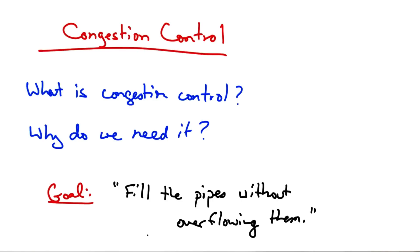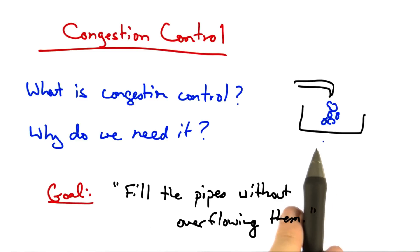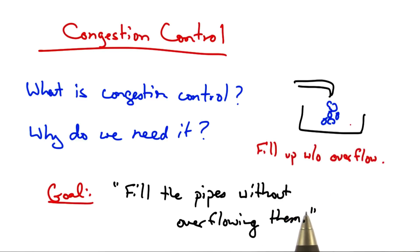To think about this in terms of an analogy, suppose you have a sink and you're filling that sink with water. How should you control the faucet? Too fast and the sink overflows. Too slow and you are not efficiently filling up your sink. So what you'd like to do is fill the bucket as quickly as possible without overflowing. The solution is to watch the sink, and as the sink begins to overflow, slow down how fast you're filling it. That's effectively how congestion control works.